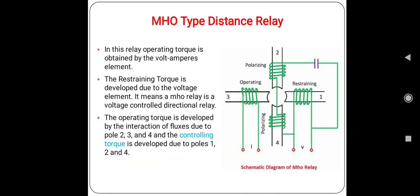The Mho relay is a very high speed relay and is also known as admittance relay. It is also sometimes called an angle impedance relay. In this relay, operating torque is obtained by the volt-ampere element and the restraining torque is developed due to the voltage element. It means a Mho relay is a voltage restrained directional relay.